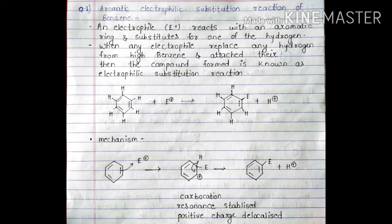What is electrophilic substitution reaction? An electrophile reacts with an aromatic ring and substitutes for one of the hydrogens. In simple words, when any electrophile replaces any hydrogen from benzene and attaches there, then the compound formed is known as electrophilic substitution reaction.